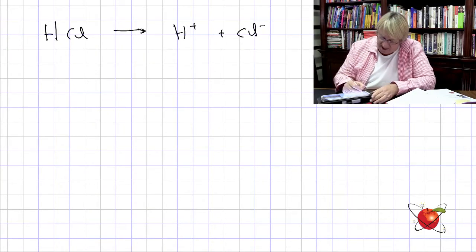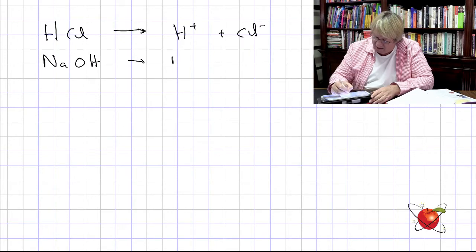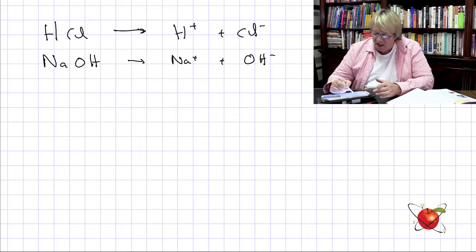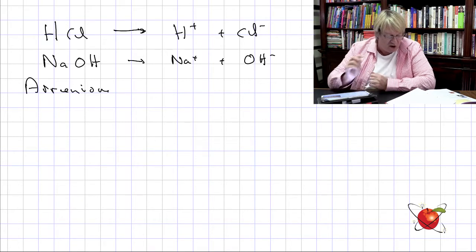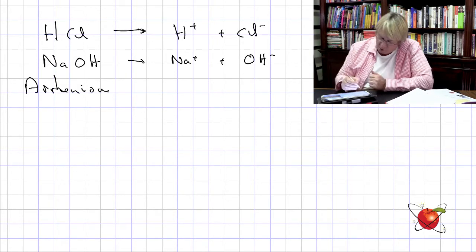Arrhenius also said that an alkali base, NaOH, dissociates into Na⁺ and OH⁻. We're still going to see this when we look at electrolytic and oxidation-reduction reactions — the electrical side of chemistry. That was Arrhenius's postulation. Then more work was done on it by Bronsted and Lowry.